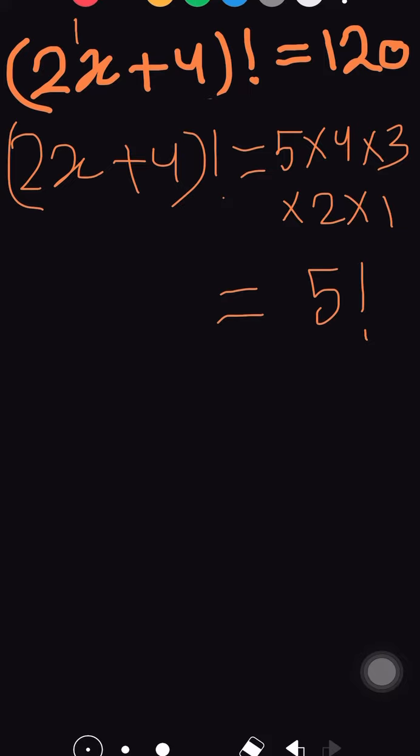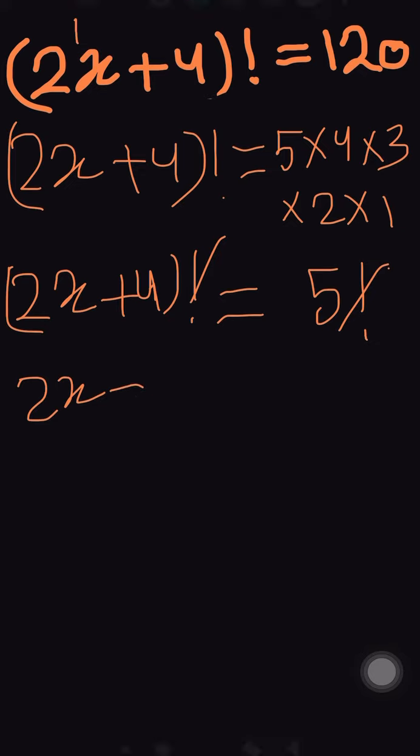Now we have (2x + 4)! equals 5!. Factorial cancels with factorial, leaving us with 2x + 4 = 5. Now we have a linear equation to solve.